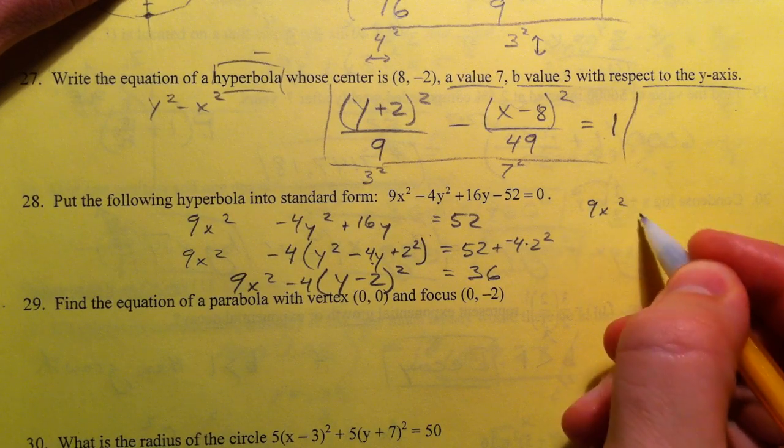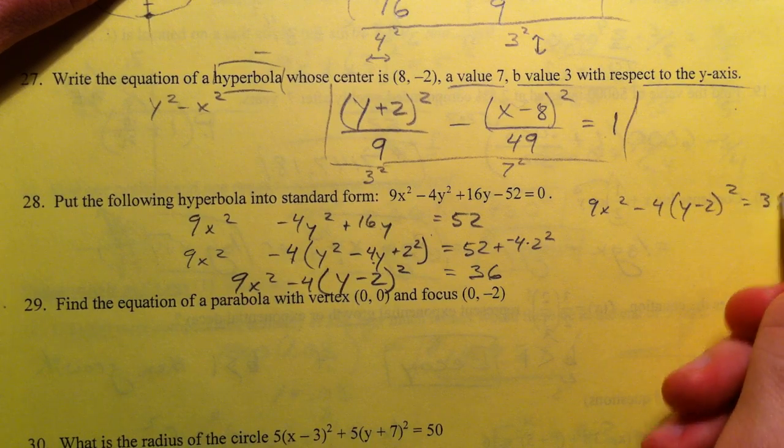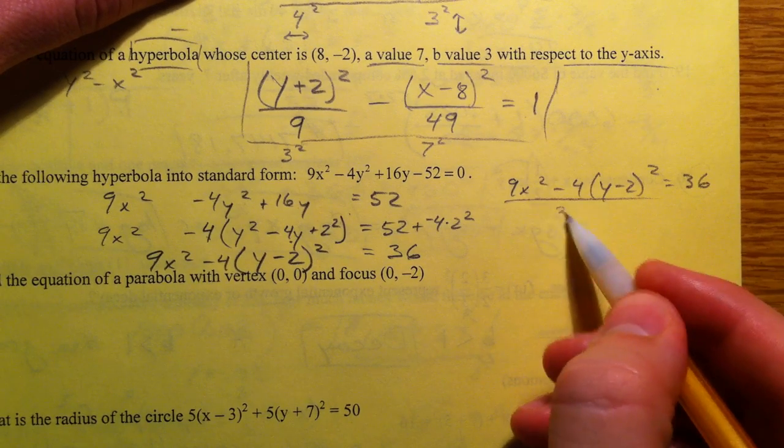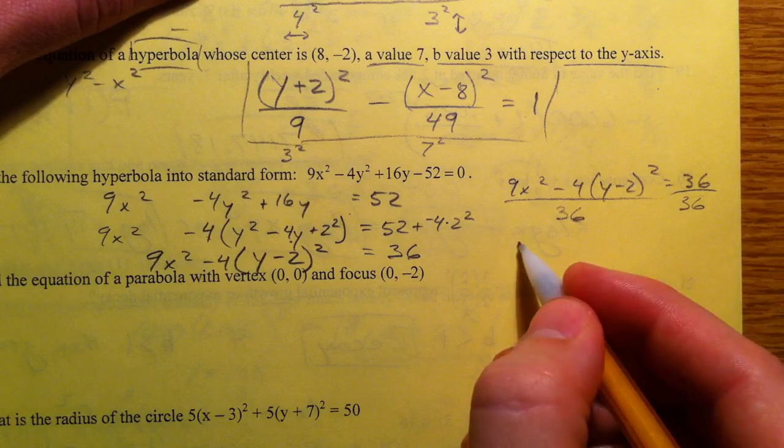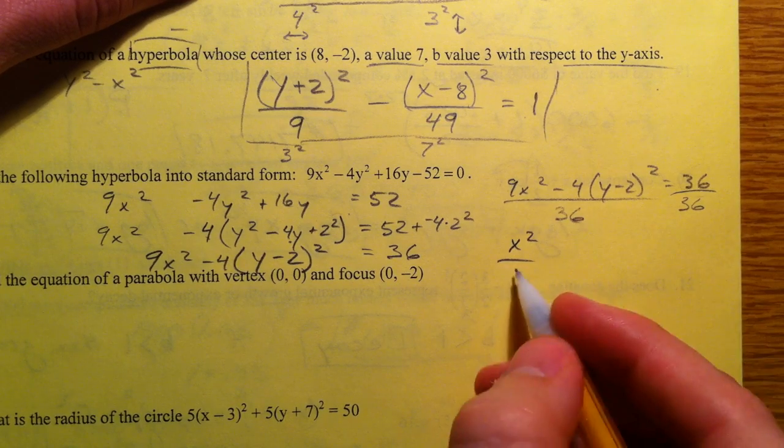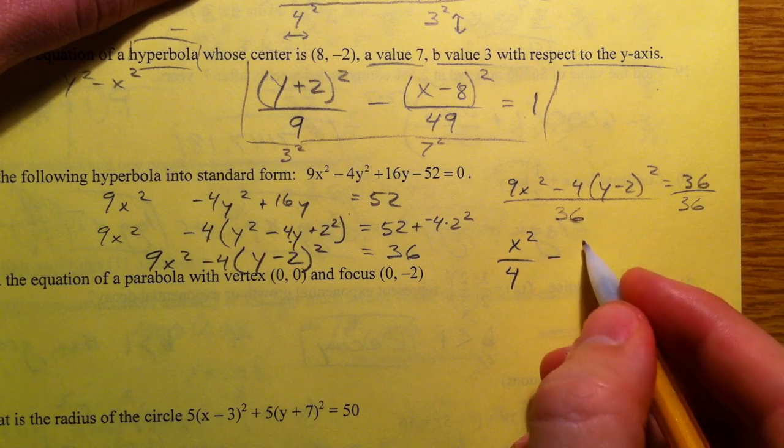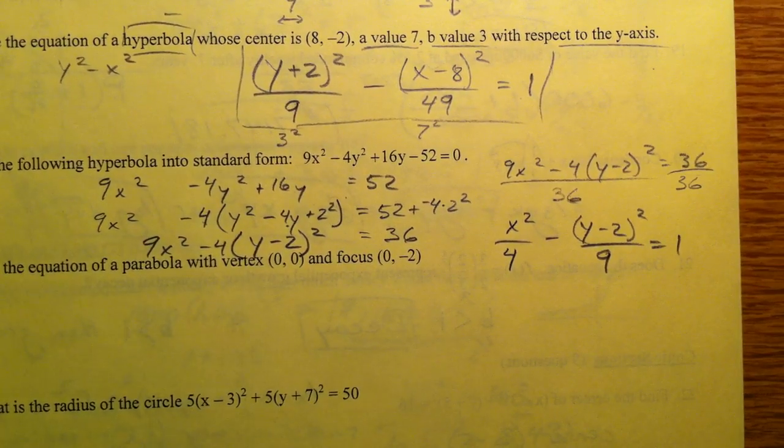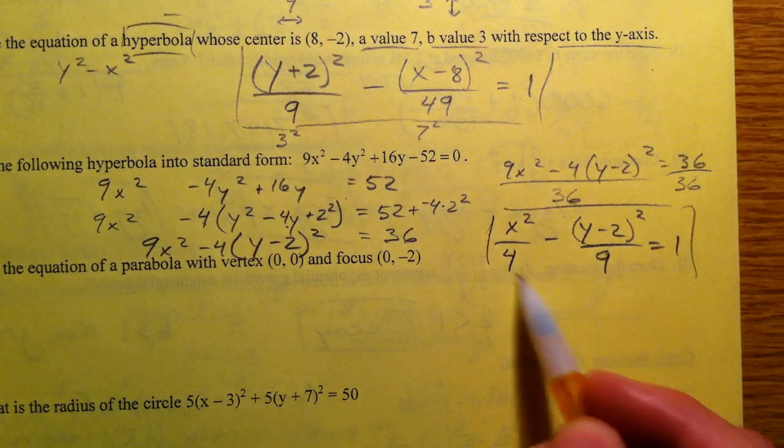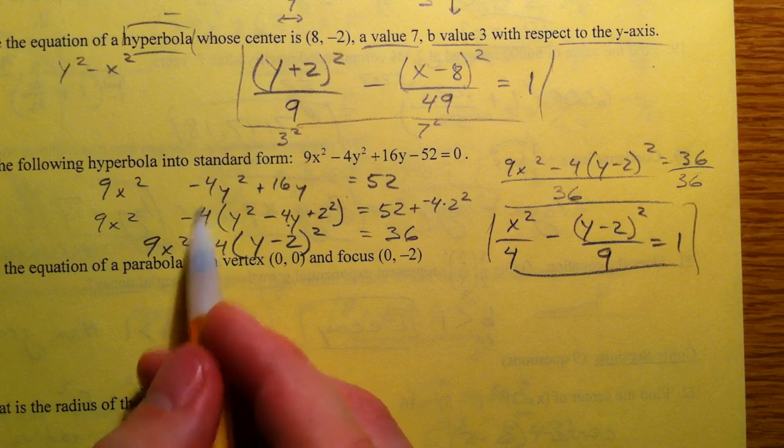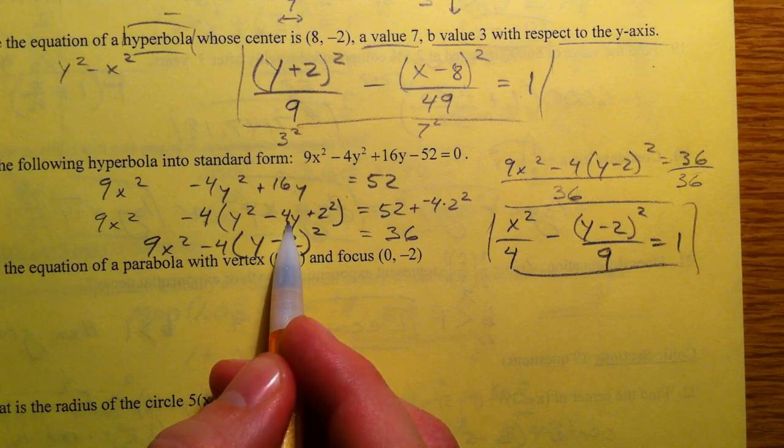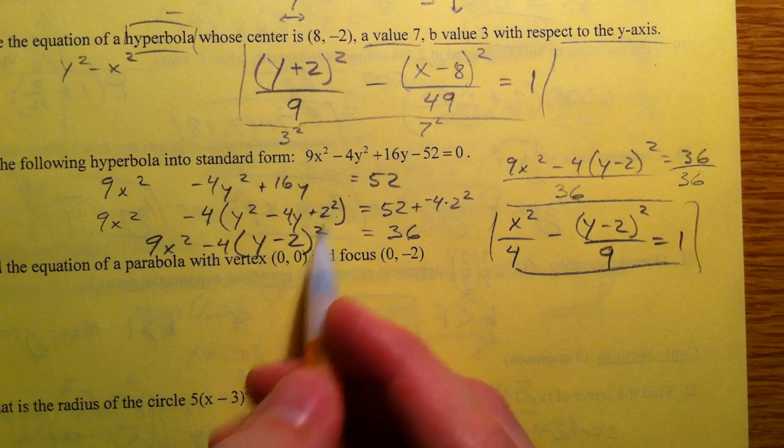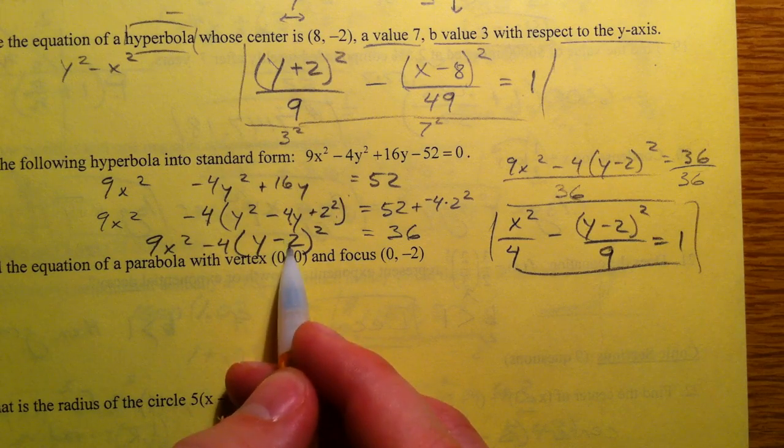So we get 9x squared minus 4 y minus 2 squared equals 36 and to get the 1 that we want we need to divide by 36. So we're going to end up with x squared 9 over 36 reduces to 1 over 4, 4 over 36 reduces to 1 over 9 and we end up with that as our hyperbola. The biggest thing with completing the square is factor out if you need it, take half the middle term squared half of 4 is 2, 2 squared it will always be added on the inside here and then the middle term just takes that form.